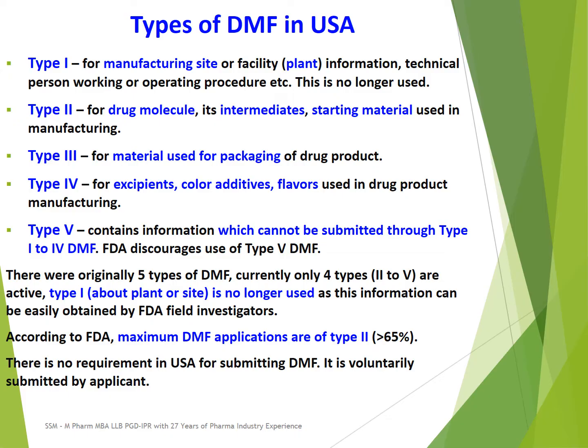There were originally five types of DMF in USA, but currently only four types are active. Type 1 has been discontinued, which covers information on plant or manufacturing site, because this kind of information can be easily obtained by FDA field investigators. According to FDA, maximum DMF applications are of Type 2 — that is, DMF for drug molecule or API or intermediates or starting materials. More than 65% of DMF applications are of Type 2.